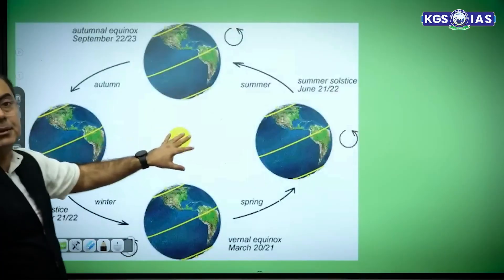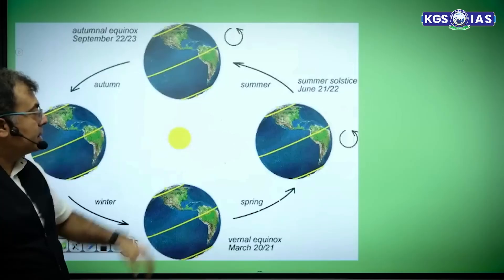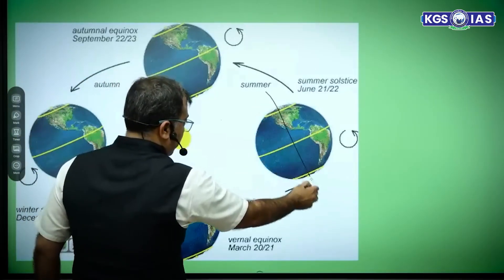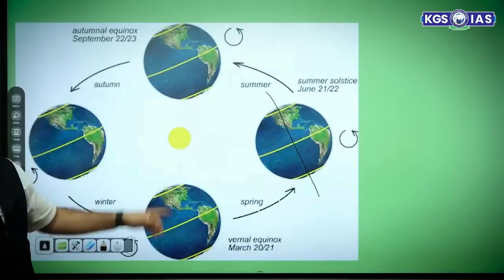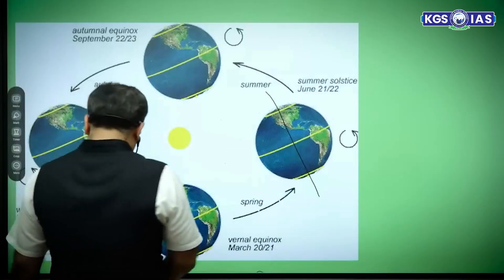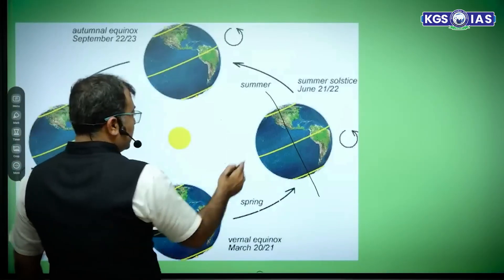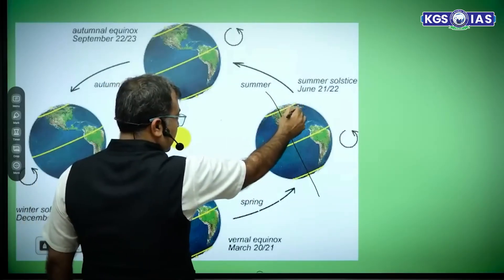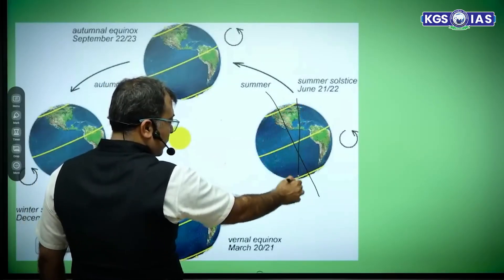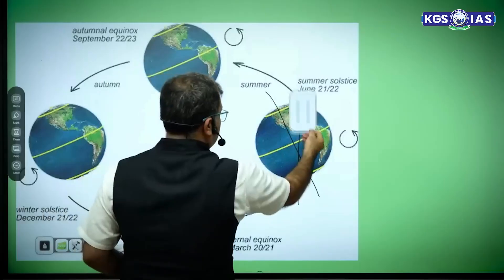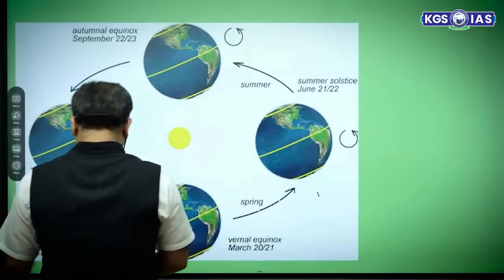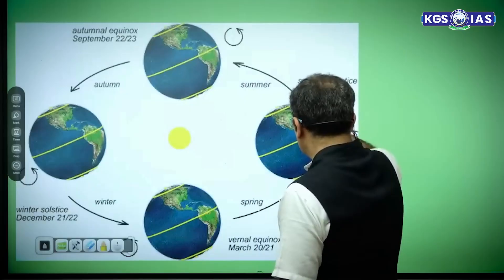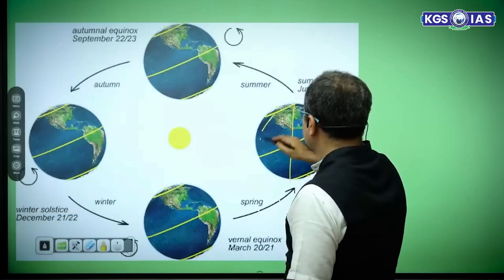This is the Sun, and this is the Earth's axis. The Sun is not heating half of the axis — it is heating this particular area. This area is being heated by the Sun; the illumination area of the Sun is this region here.